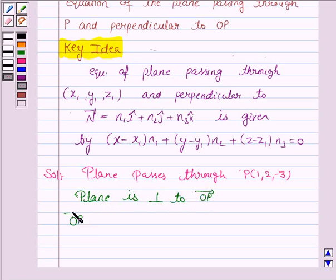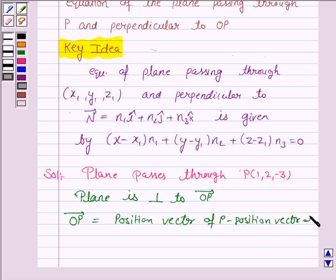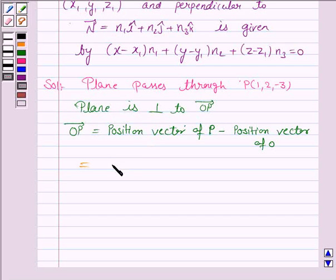Vector OP is given by position vector of P minus position vector of O. Now position vector of P is î + 2ĵ - 3k̂. Since O is the origin, position vector of origin is 0î + 0ĵ + 0k̂.